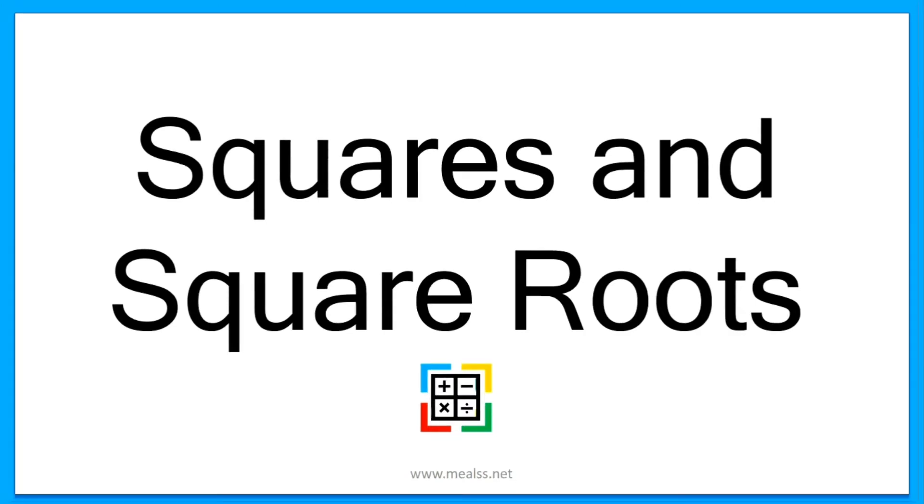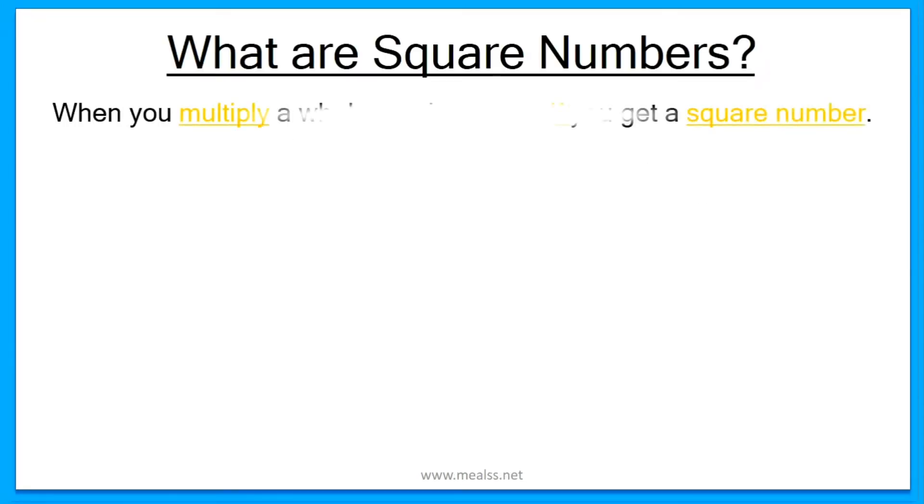Squares and square roots. What are square numbers? When you multiply a whole number by itself, you get a square number.